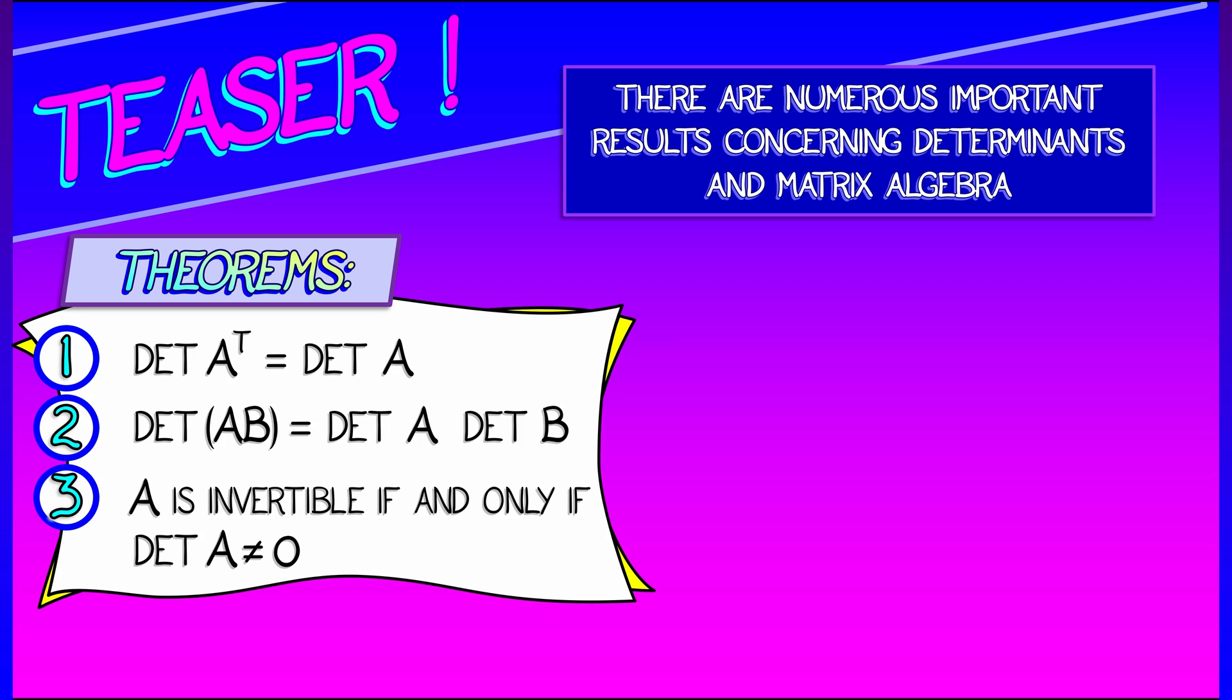And lastly, A is an invertible matrix if and only if the determinant of A is non-zero. That is, the determinant determines invertibility.